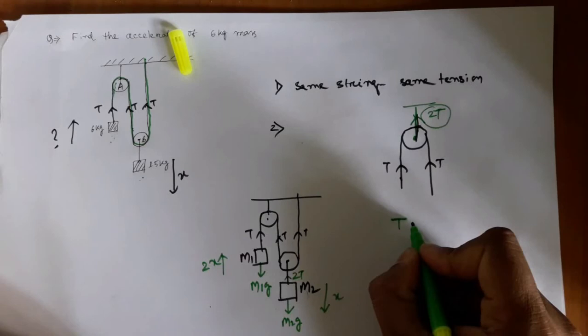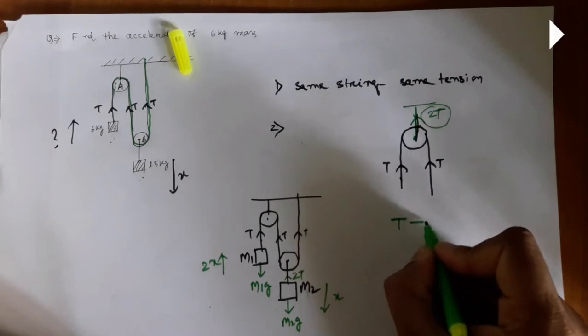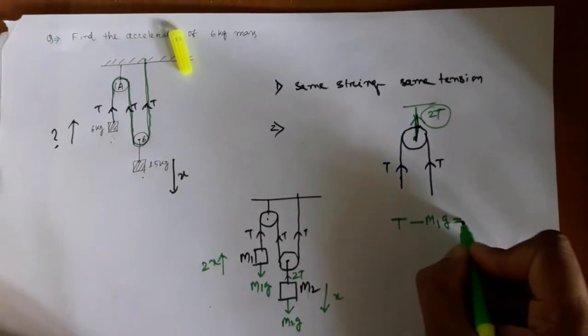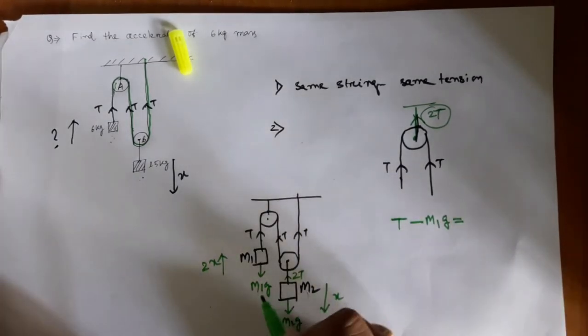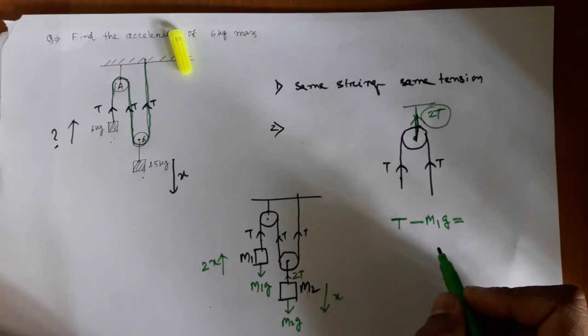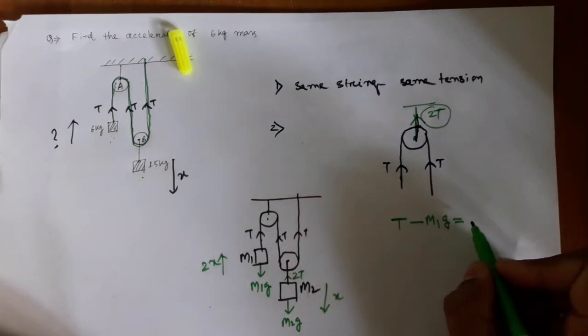Coming to the left-hand side: which is bigger, tension T or M1·g? Tension T must be bigger because M1 is going upward only because of tension T. So T minus M1·g equals mass into acceleration, M1 into, what will be its acceleration?